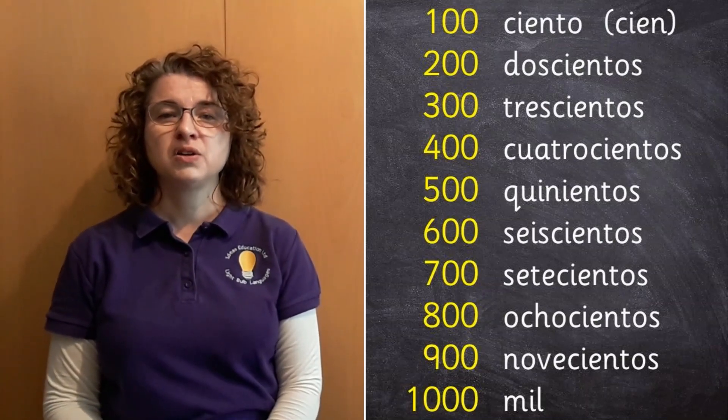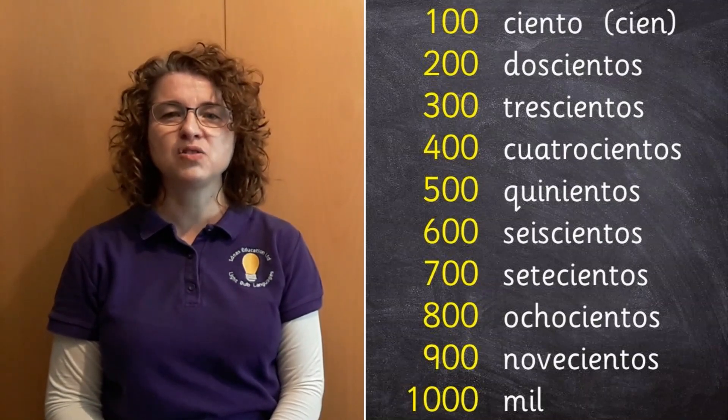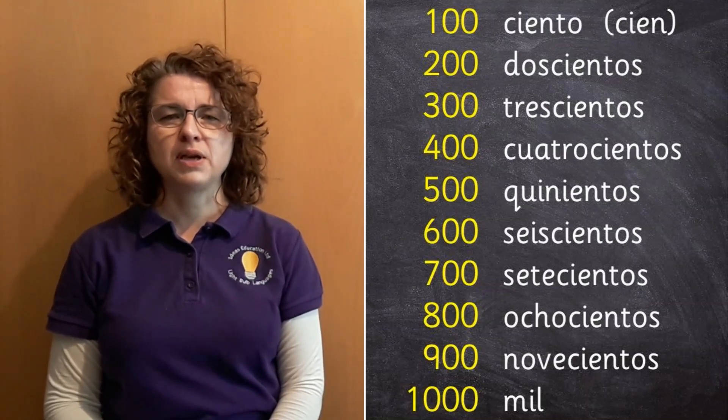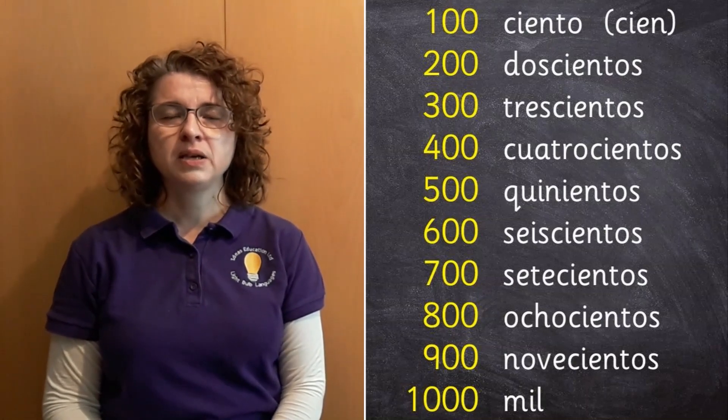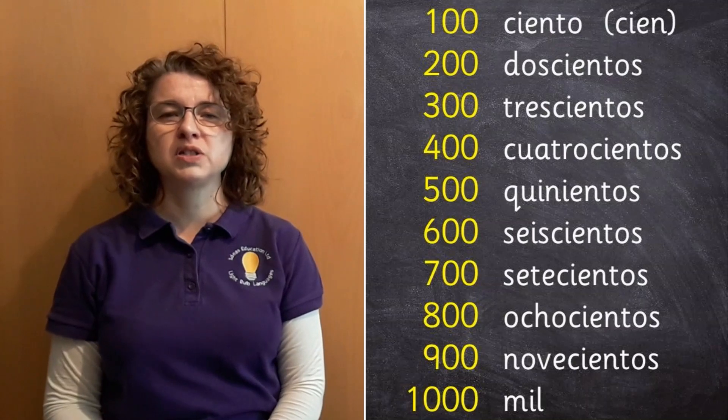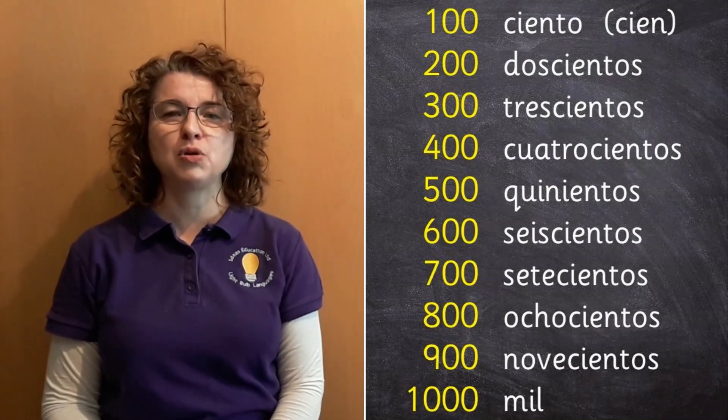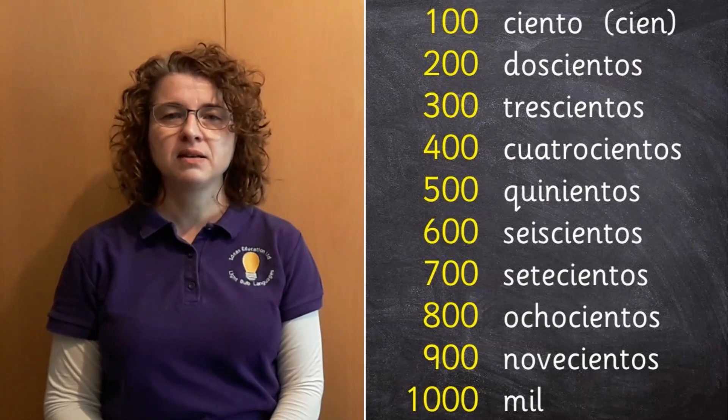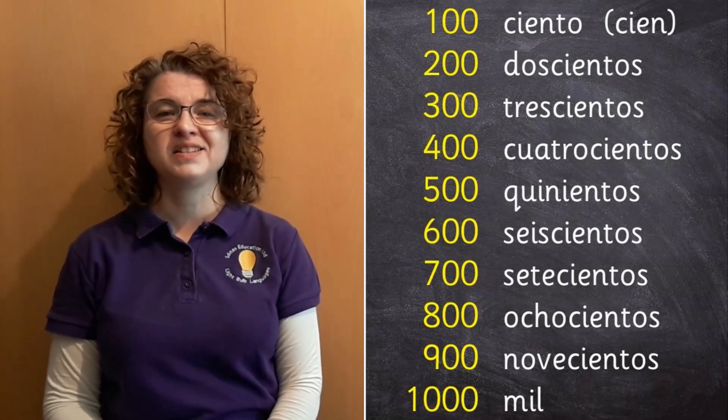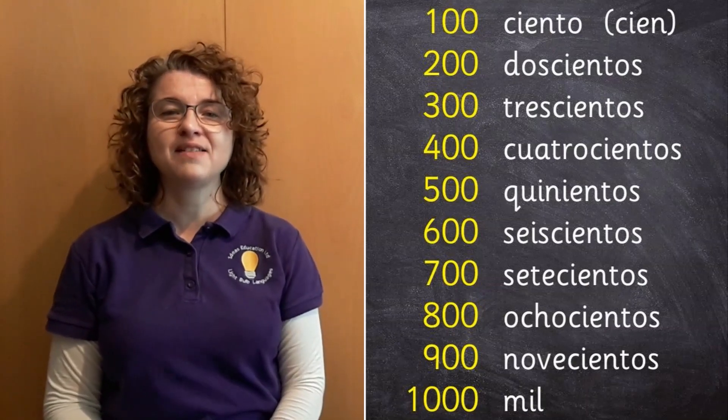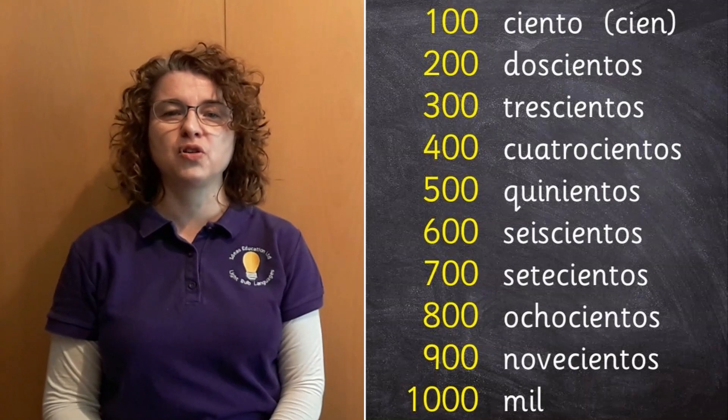So first of all, to say a hundred, you need the word ciento, ciento. Now in brackets there, you can see another word cien. If the number that you want is one hundred by itself, one zero zero, you use the word cien. If it's between a hundred and one and a hundred and ninety-nine, you need ciento. So you're going to use ciento a lot more than you're going to use cien.